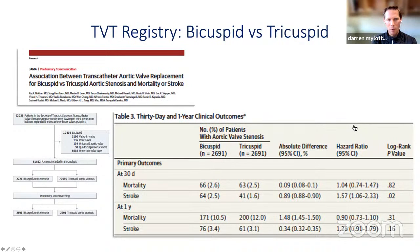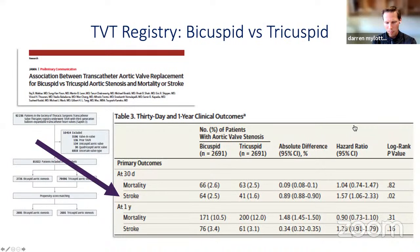The same group then published this important registry in JAMA — the TVT ACC registry — looking at 30-day and one-year clinical outcomes in bicuspid versus tricuspid aortic valve, and for the first time noted a significant increase in stroke rate among patients with bicuspid compared to tricuspid aortic valve. This, for me, is maybe one of the most important issues when we consider applying TAVR technology, particularly to younger patients with bicuspid aortic valve disease.